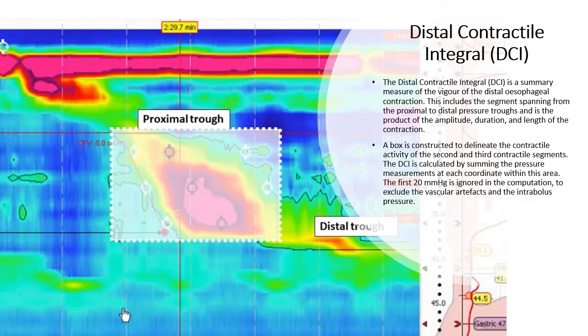The distal contractile integral is a summary measure of the vigor of the distal esophageal contraction. This includes the segment spanning from the proximal to distal pressure troughs and is the product of the amplitude, duration, and length of the contraction.